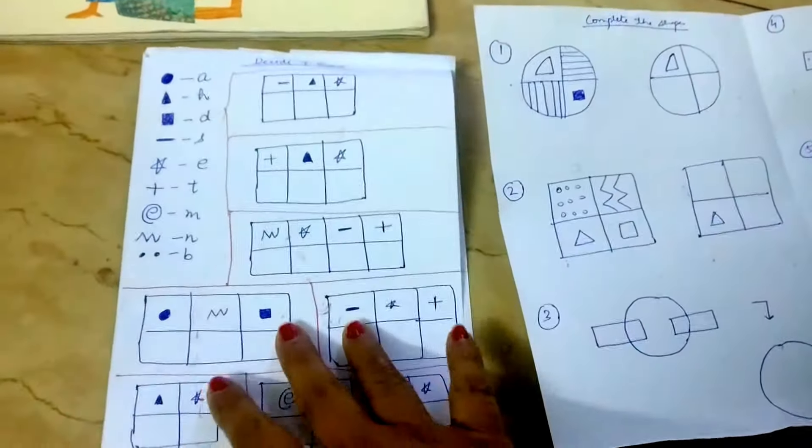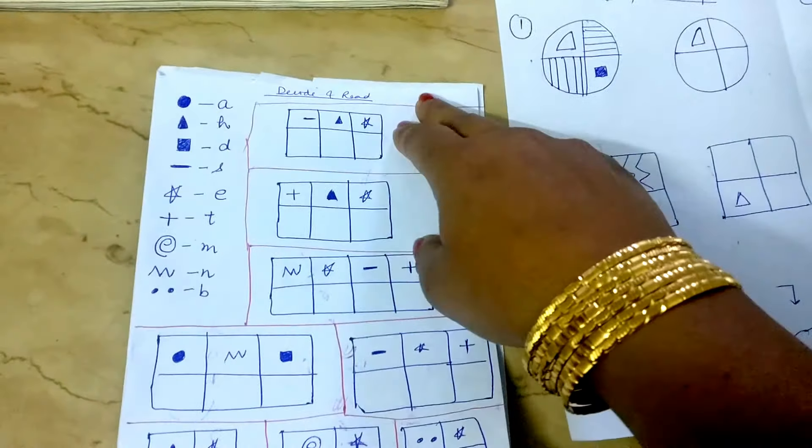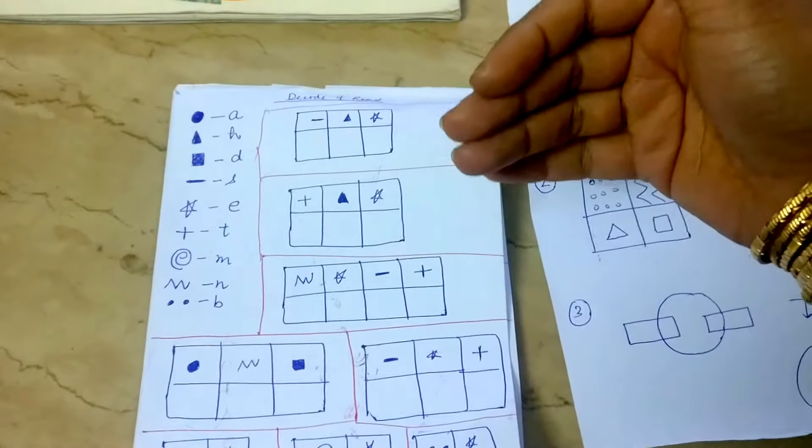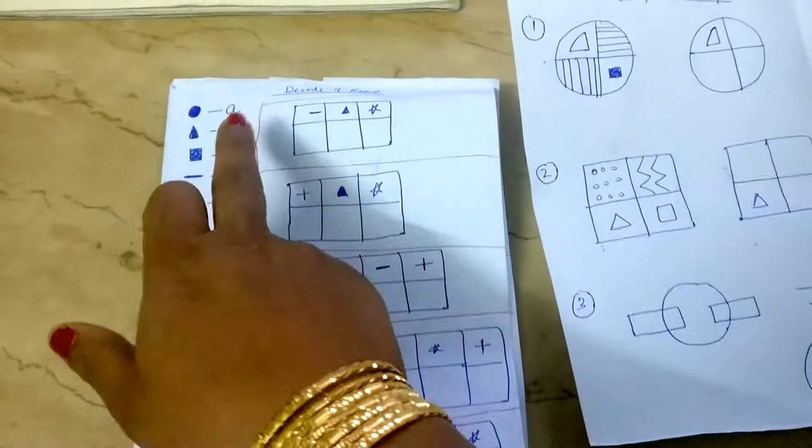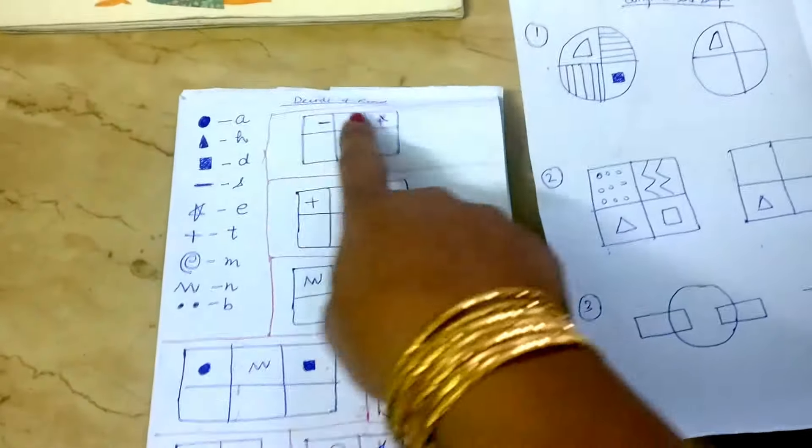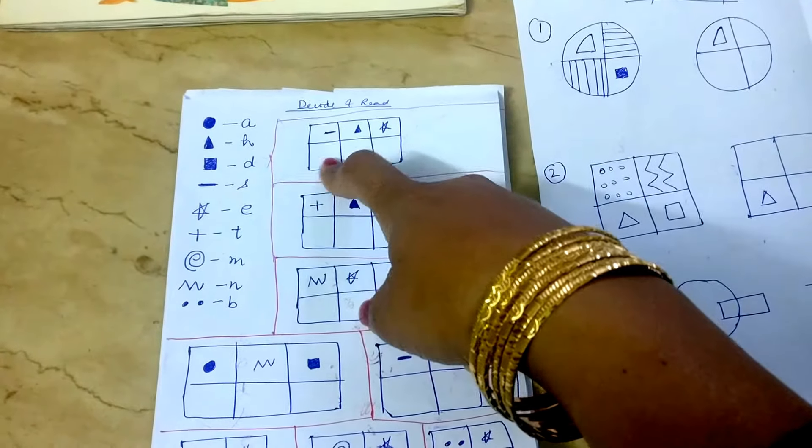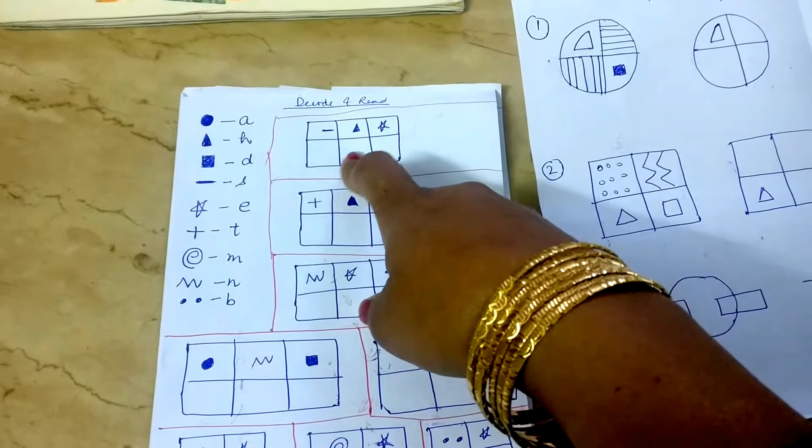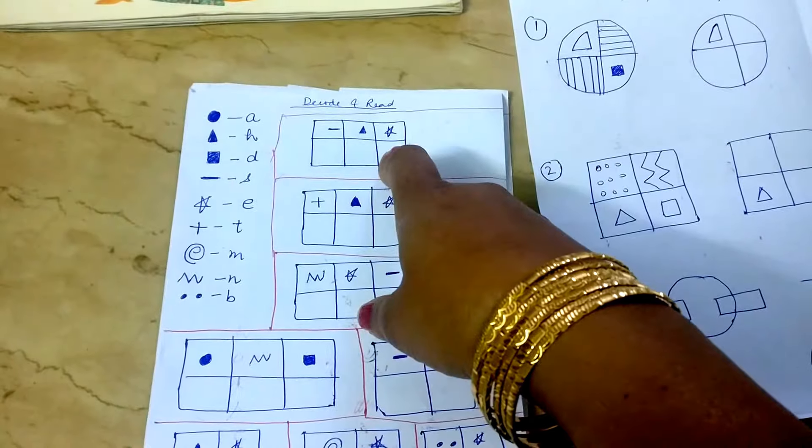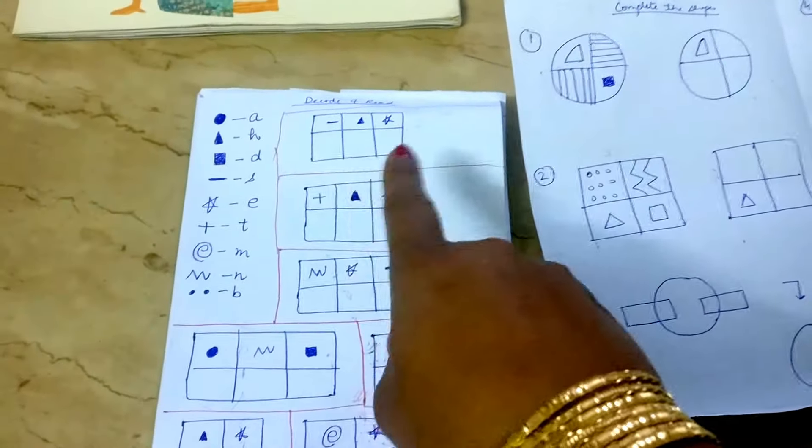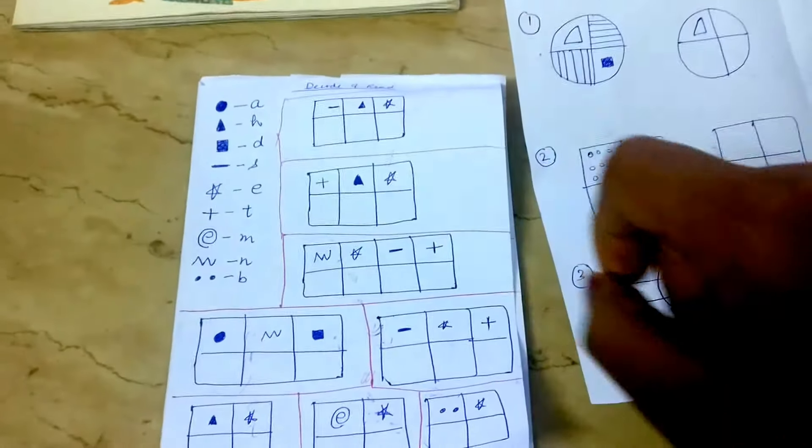So coming with this one, this is a logical game inspired by the older ones I've done. Here's a code for each alphabet and here's decode and read. Each symbol represents a letter, like H and E, so she can decode and read these small words.